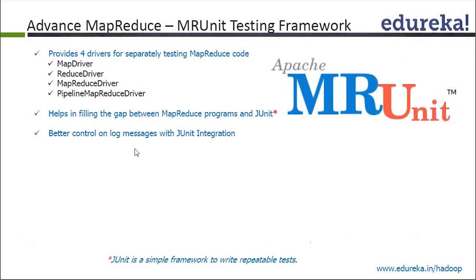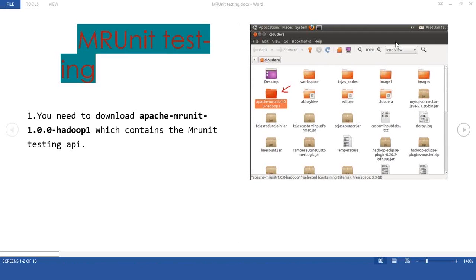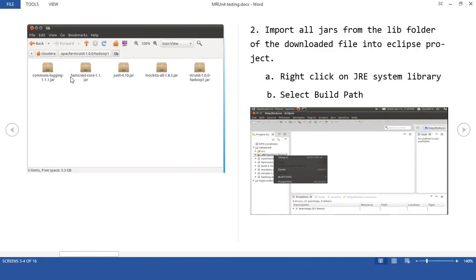You need a few JAR files available on your virtual machine to do the testing. Let me show you the document available for the MRUnit testing framework. This document is available as part of your LMS access. You need to download the Apache MRUnit testing framework along with certain other JAR files, and you need to have those JARs integrated whenever you are running this MRUnit testing framework.